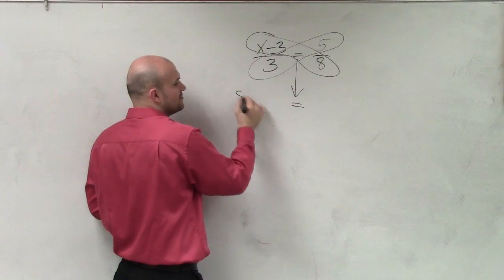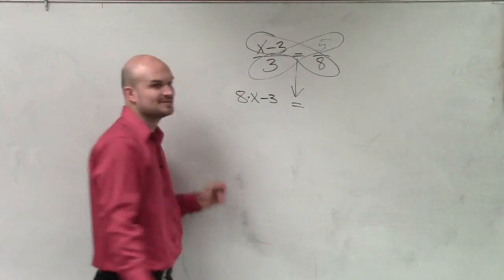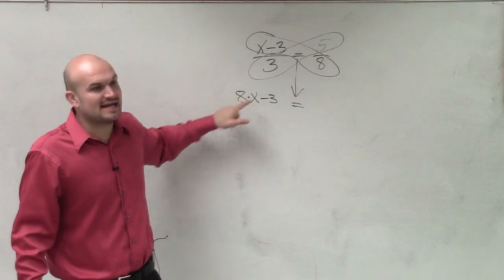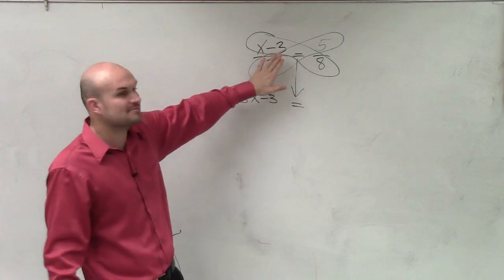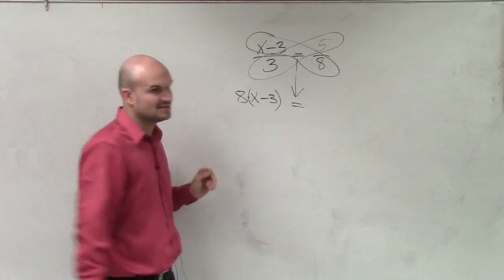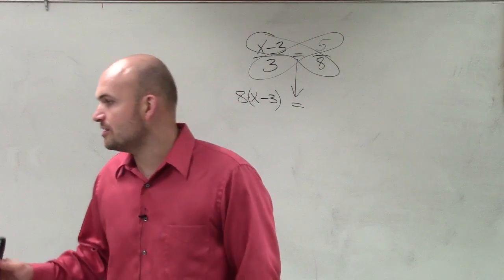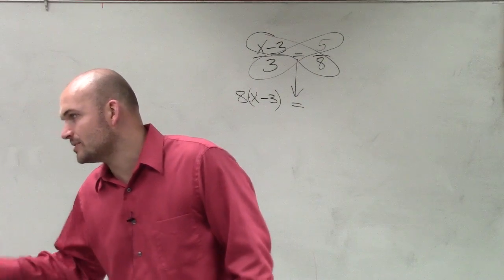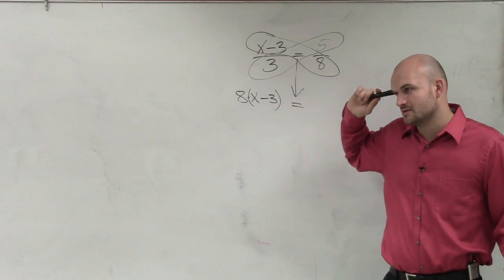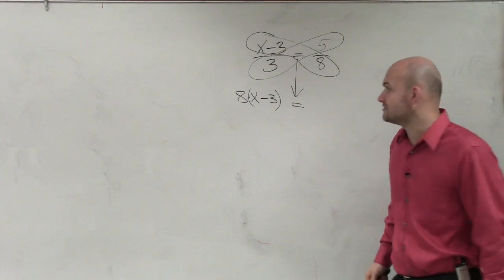So how do you write this? Remember, guys, don't write 8 times x minus 3 like that because that says 8 times x. That does not say 8 times negative 3. When you're multiplying 8 times an expression, make sure you put that expression in parentheses. Justice, do you remember what property we use when we have a product outside with the parentheses? Starts with a d and rhymes with discrete property—the distributive property.